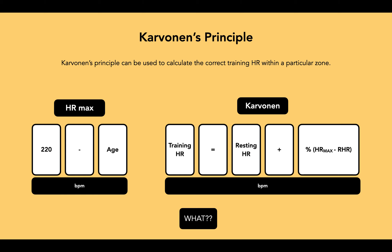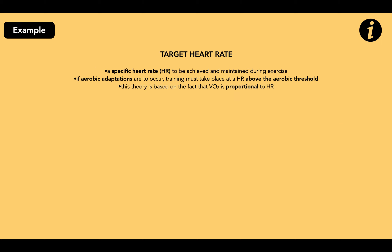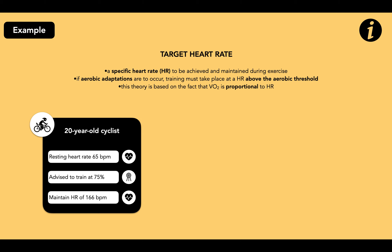Let's have an example. You want a target heart rate to be achieved and maintained during exercise that will allow you to achieve aerobic adaptations. What this principle suggests is that the heart rate should be slightly above the aerobic threshold, and this theory is based on the fact that VO2 max is proportional to heart rate. We have a 20-year-old cyclist whose resting heart rate is 65 beats per minute — close to bradycardia at 60 beats. They've been advised to train at 75%, right in the middle of the aerobic zone, and maintain a heart rate of 166 beats per minute. So how did we get that 166 beats per minute?